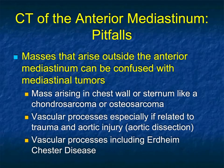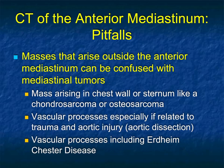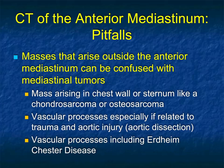In this last part, I want to talk about some pitfalls. Masses that arise outside the anterior mediastinum can be confused with mediastinal tumors — something arising in the chest wall or sternum, such as chondrosarcoma or osteosarcoma, which can be due to prior radiation therapy or not. Also consider vascular processes related to trauma, mediastinal hematoma, and look at the aorta to make sure there's no dissection.